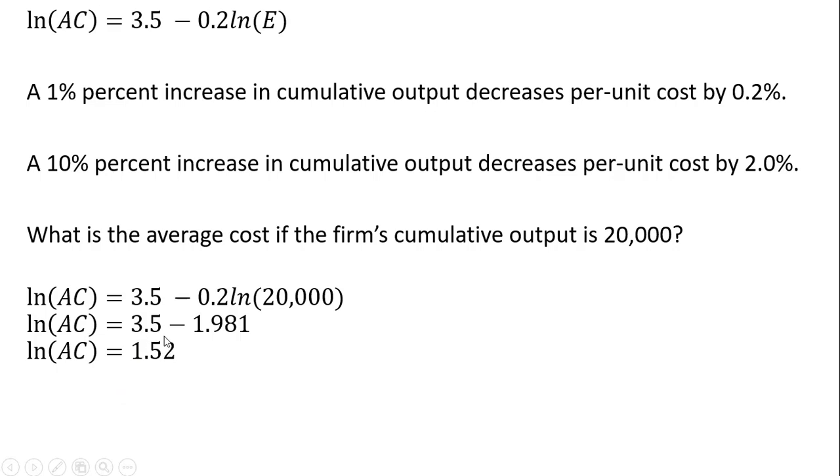And 3.5 minus 1.981, there's a little rounding here, we're going to call that 1.52. We're going to exponentiate both sides of the equation. And so E, the mathematical constant E raised to the 1.52 power becomes $4.57.